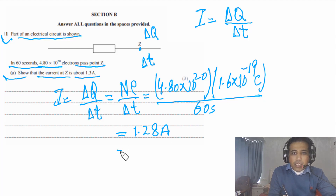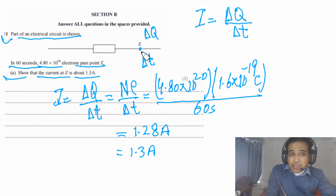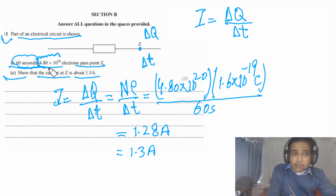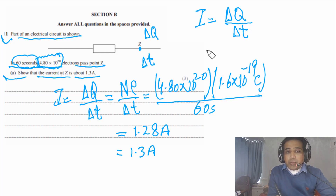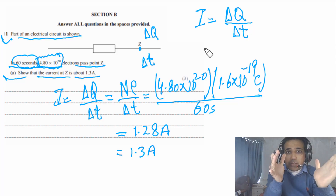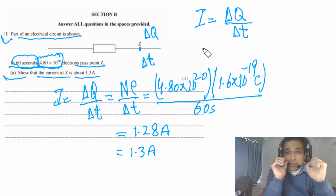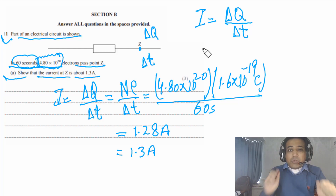To 2 significant figures, this is 1.30 amps — our final answer. Simply put, I was looking at point C for 60 seconds, counted the number of electrons passing through, divided the total charge by 60 seconds, and calculated the current through point C. I = Q/T is a beautiful relationship, and I hope this gives you a deeper physical understanding, not just the equation.